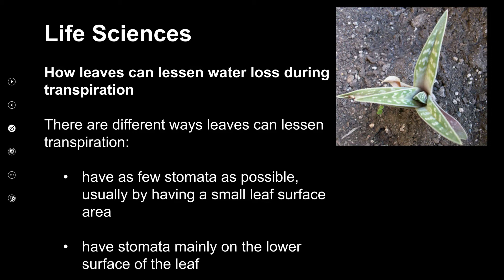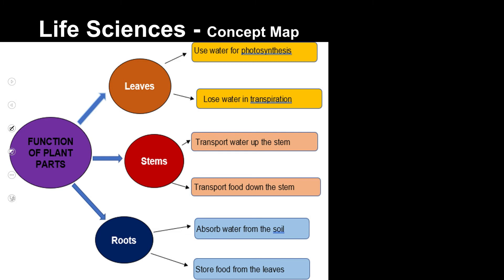The next aspect is having as few stomata as possible. Most plants achieve this by having very small leaves with a smaller surface area, so there are fewer stomata and they lose less water. And then the last method is that most plants have stomata mainly on the lower surface of the leaf.